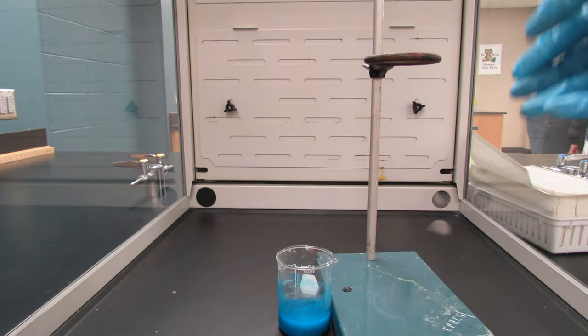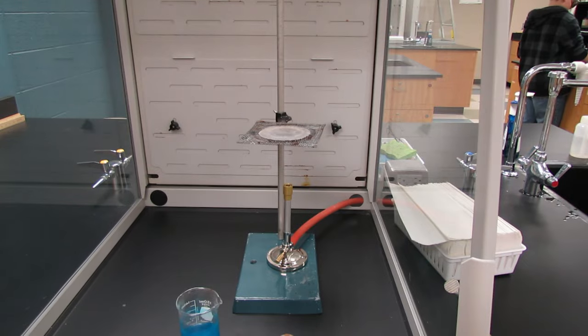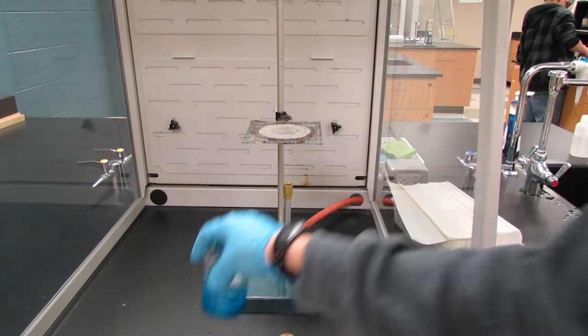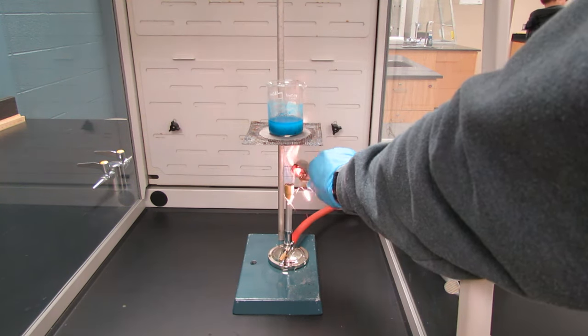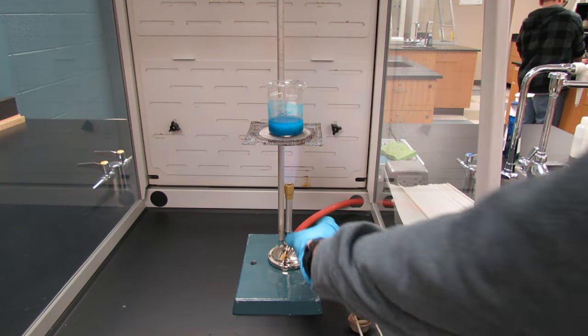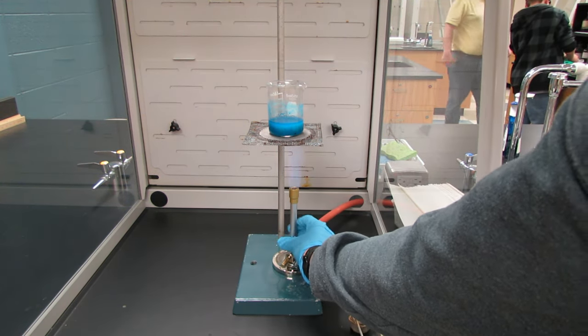Now set up a ring stand with a metal ring and a wire gauze so that we can set the beaker with the copper hydroxide right on top. Light your Bunsen burner and begin heating the copper hydroxide.